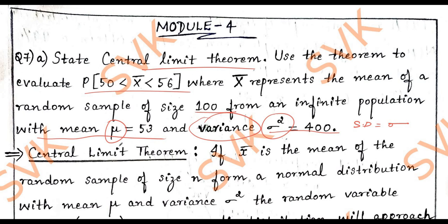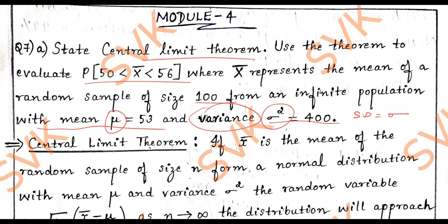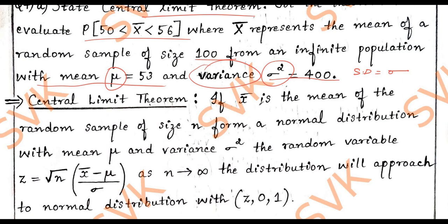Moving on to the central limit theorem statement. The statement states that if x̄ is the mean of the random sample of size n from a normal distribution with μ and variance σ², the random variable z = √n × (x̄ - μ)/σ. As n tends to infinity...